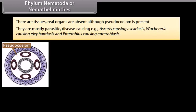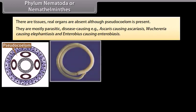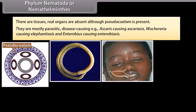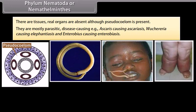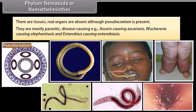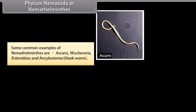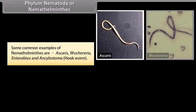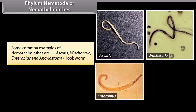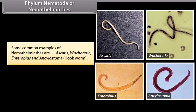They are mostly parasitic disease-causing organisms, e.g. Ascaris causing Ascariasis, Wuchereria causing Elephantiasis, and Enterobius causing Enterobiasis. Some common examples of Nemathelminthes are Ascaris, Wuchereria, Enterobius, and Ancylostoma, hookworm.